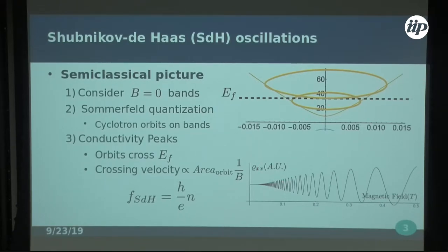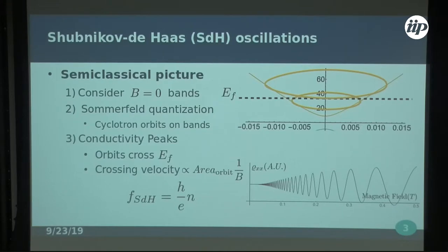For a system like this, you'd have many oscillations all clumped together when the magnetic field is small. As you raise the field, many Landau levels pass through EF — you have a level to scatter into, then you don't, and so on. The damping you see is caused by impurities, which we model. That's also what you observe in experiments.